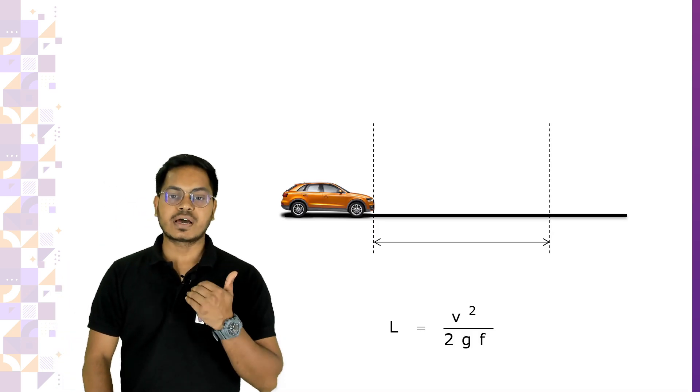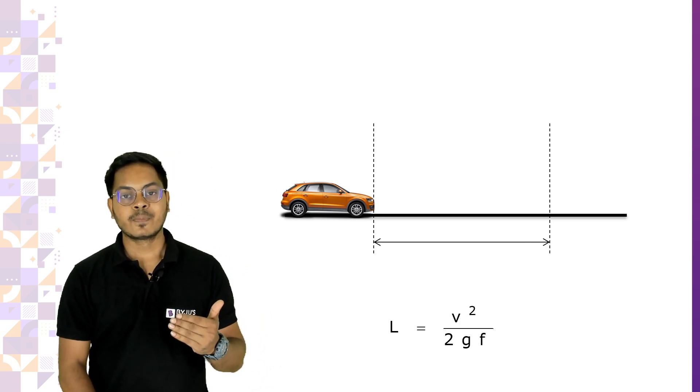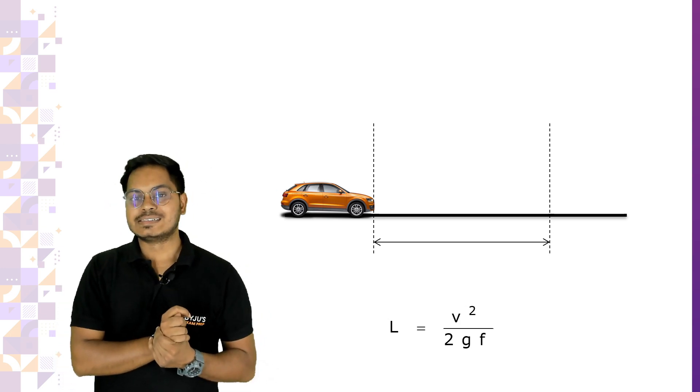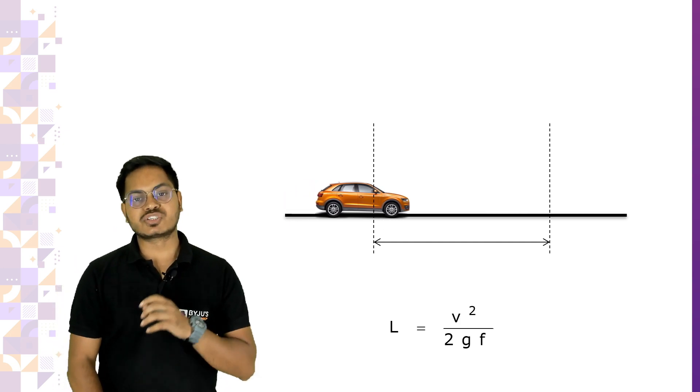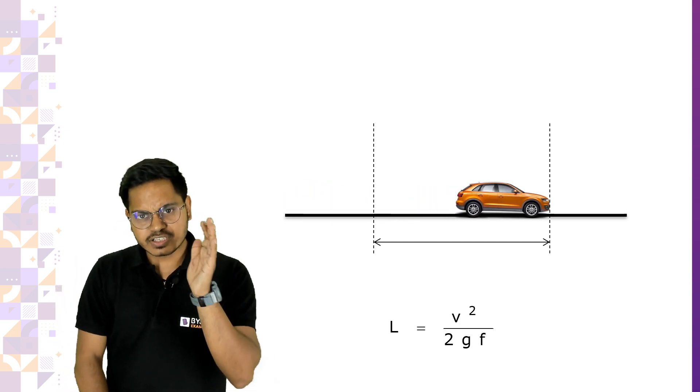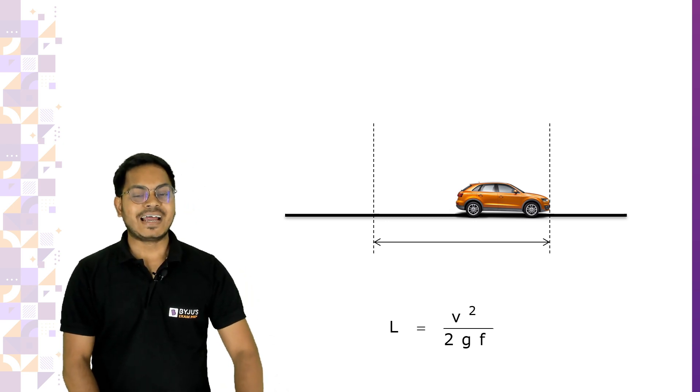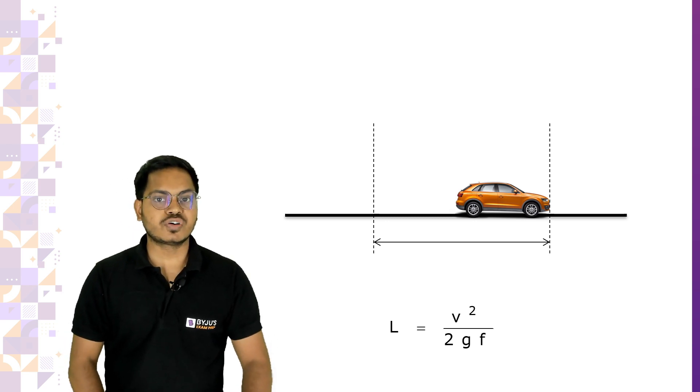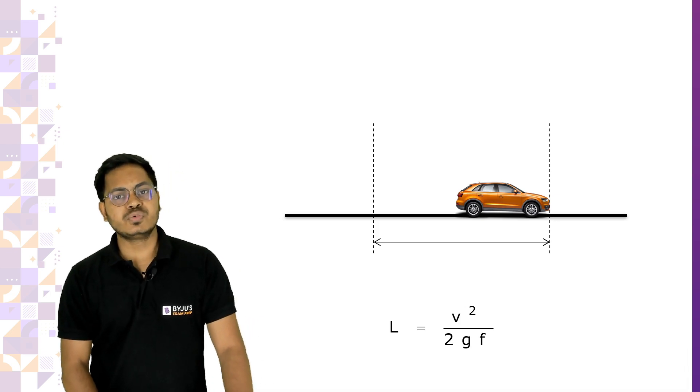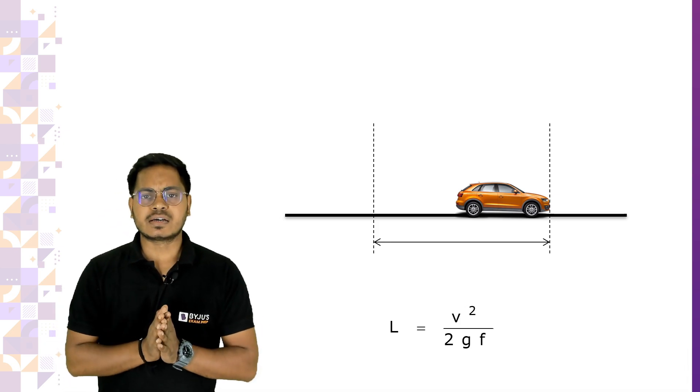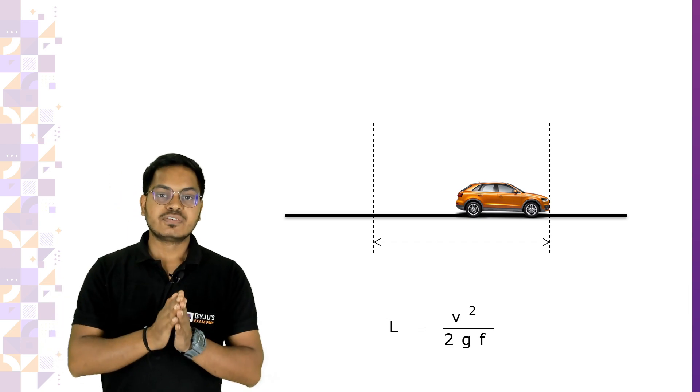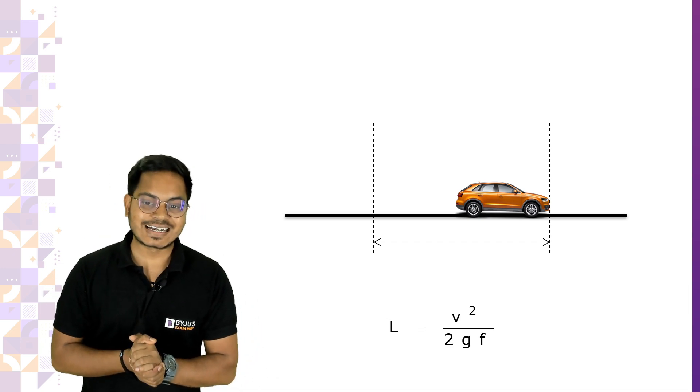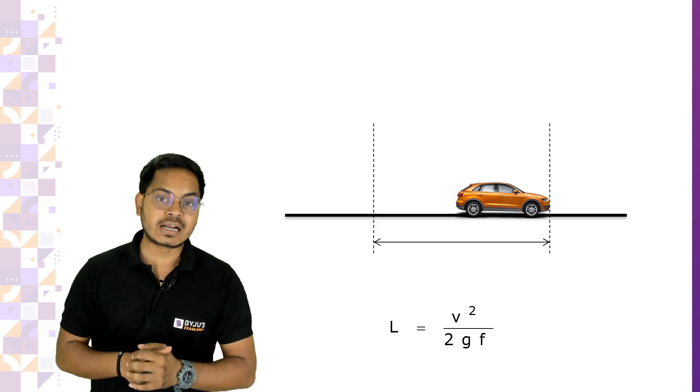Let's try to understand what happens when the driver has applied the brake just after making the decision. After application of brake, eventually the vehicle will come to rest, the velocity will become zero. Here we'll use a simple equation where the change in energy will be equal to the work done that has happened.